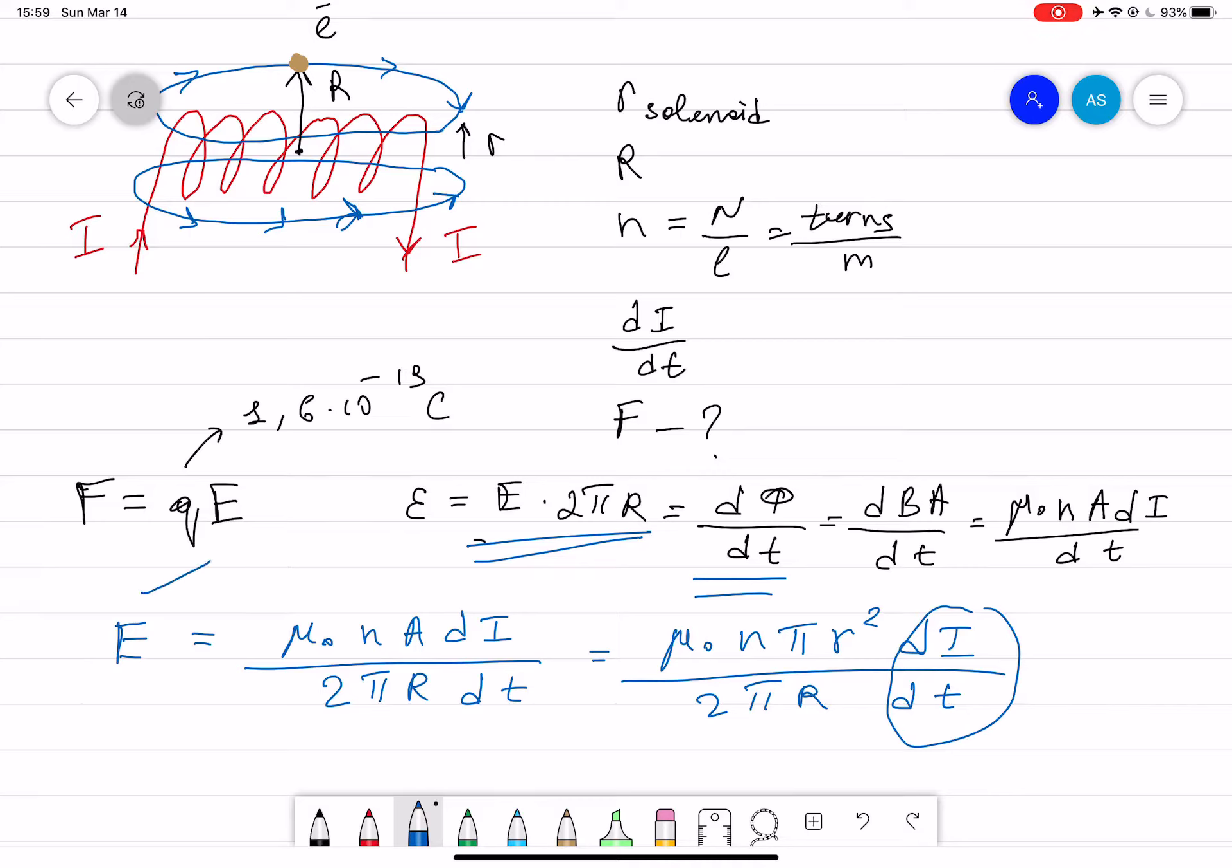So if you plug the numbers in, you can find the electric field. And with the electric field, you have to multiply by the charge, which is 1.6 times 10 to the power minus 19, and you will get the force that is acting on the electron.